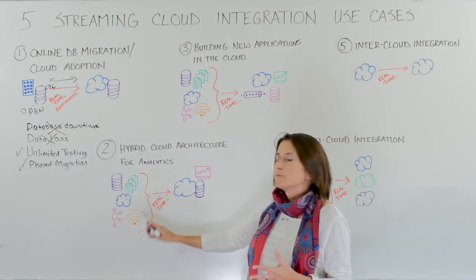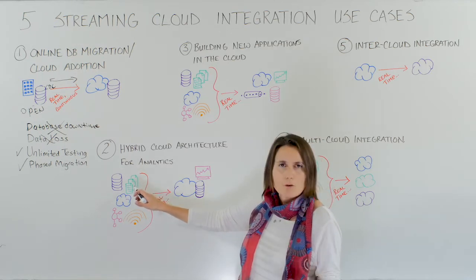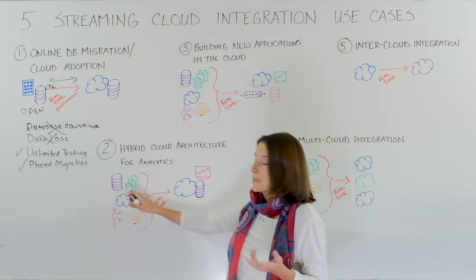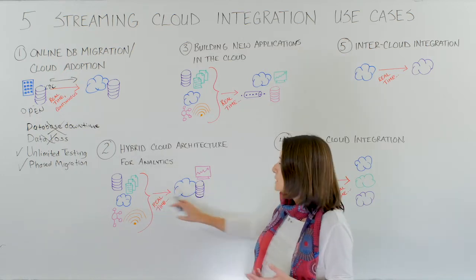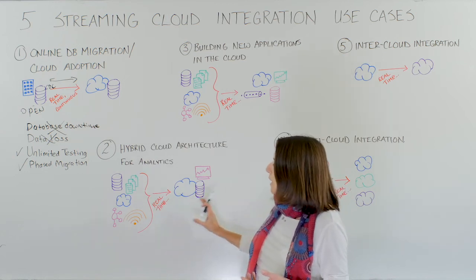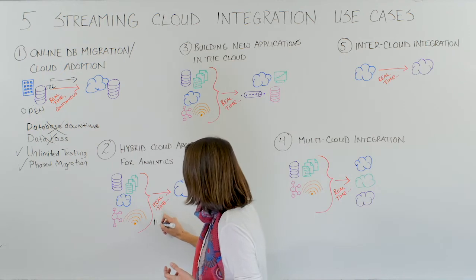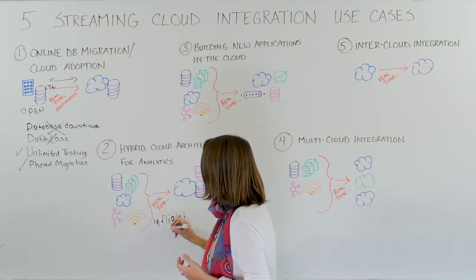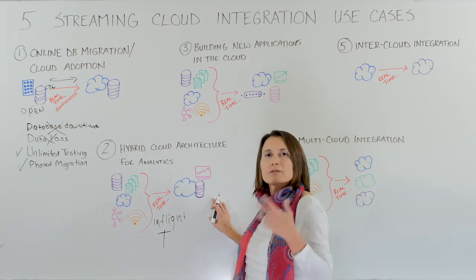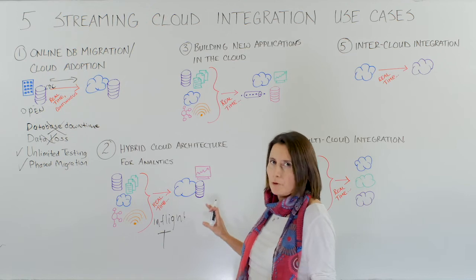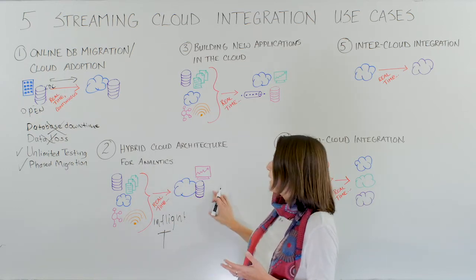Streaming data integration helps move all kinds of enterprise data — databases, machine data, log files, security files, system log files, existing cloud sources, messaging systems, and sensor data — all in real time to your cloud analytics solution. Some streaming data integration solutions also give you the ability to do in-flight data processing, so transformations happen in-flight, delivering data to the target system without adding latency and in the consumable format it needs.